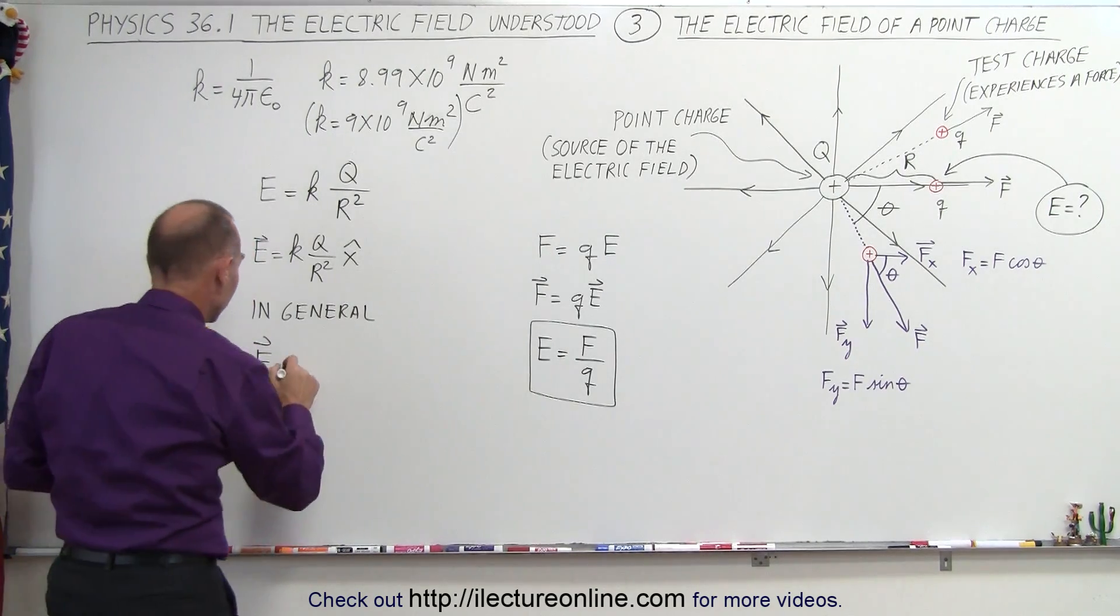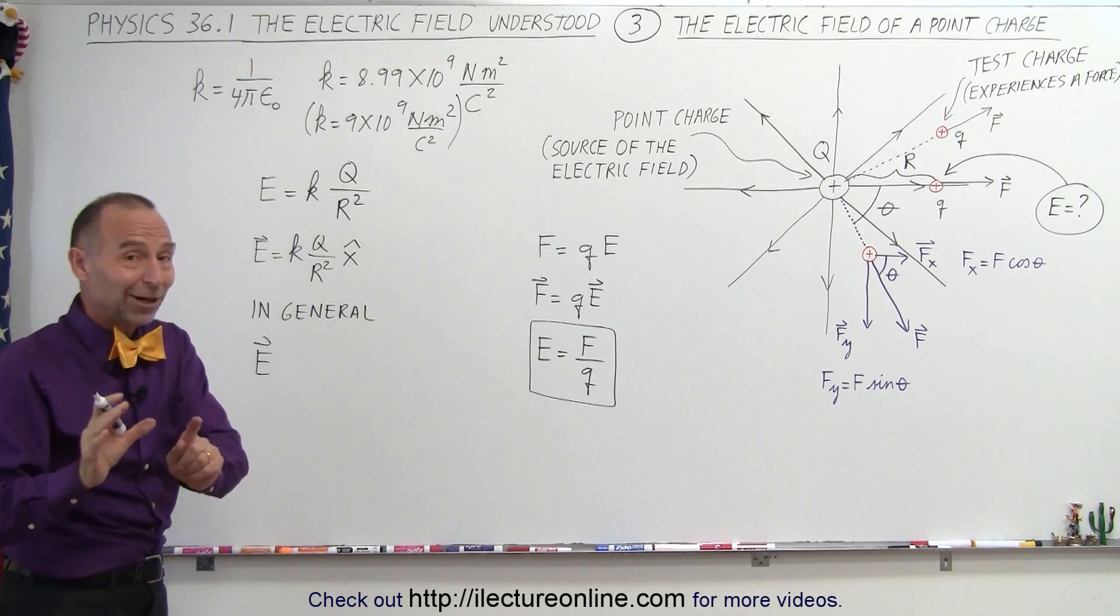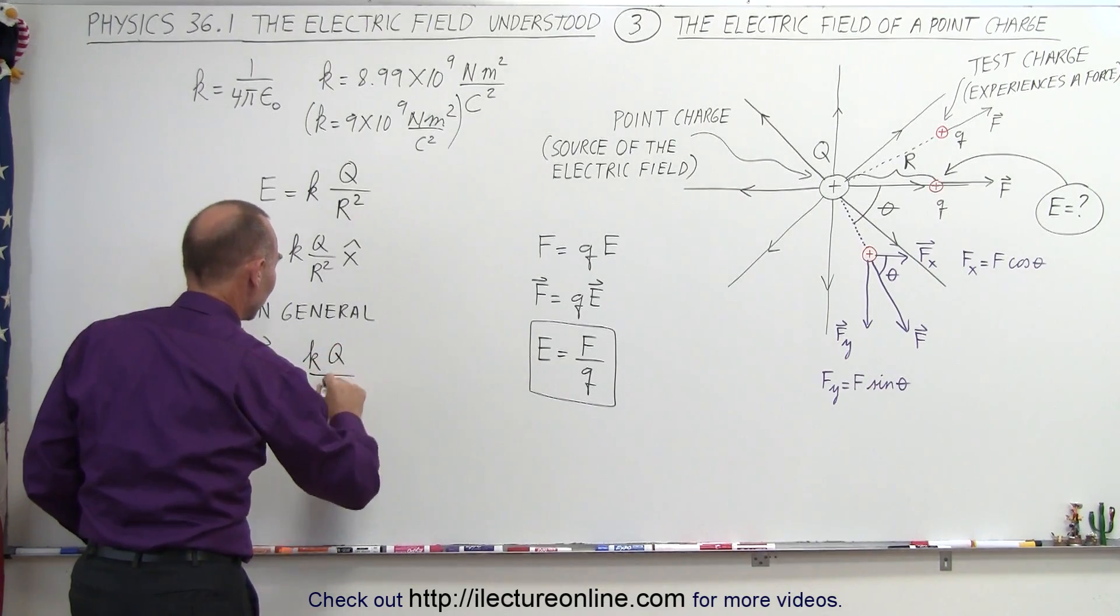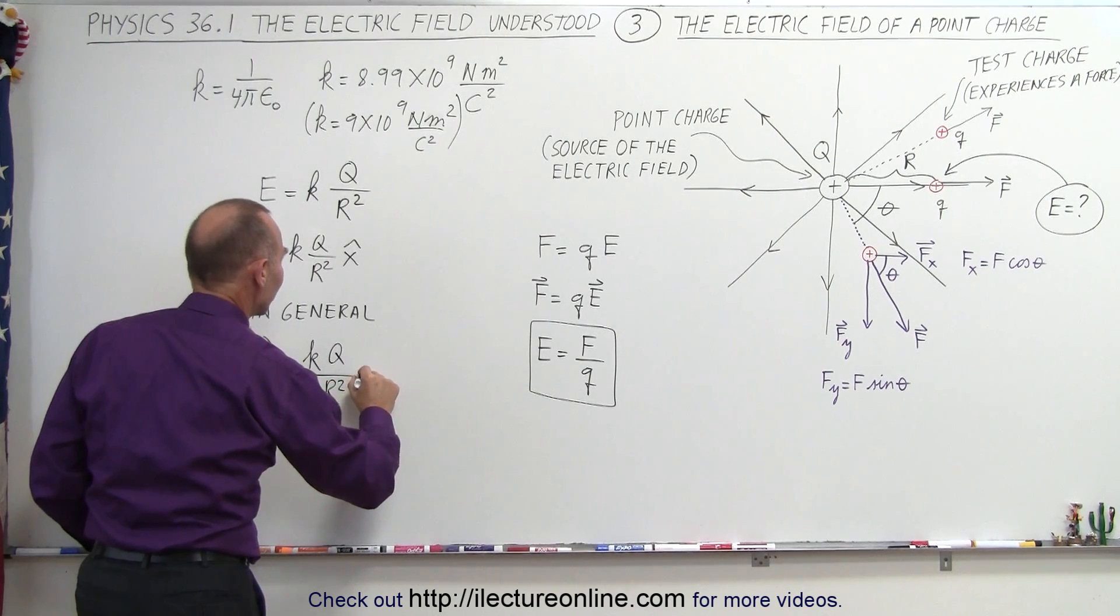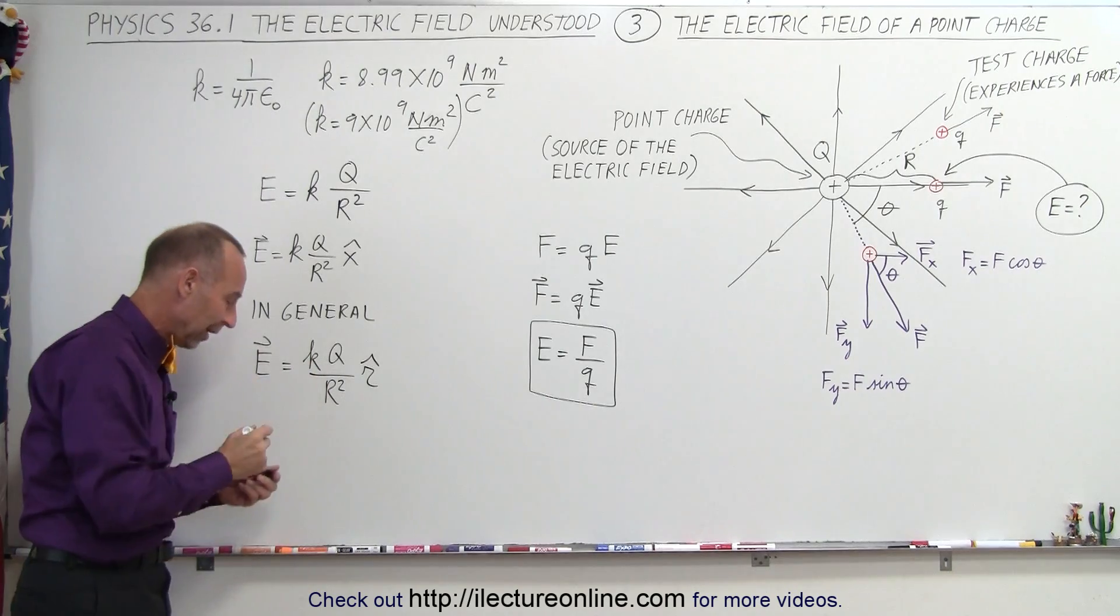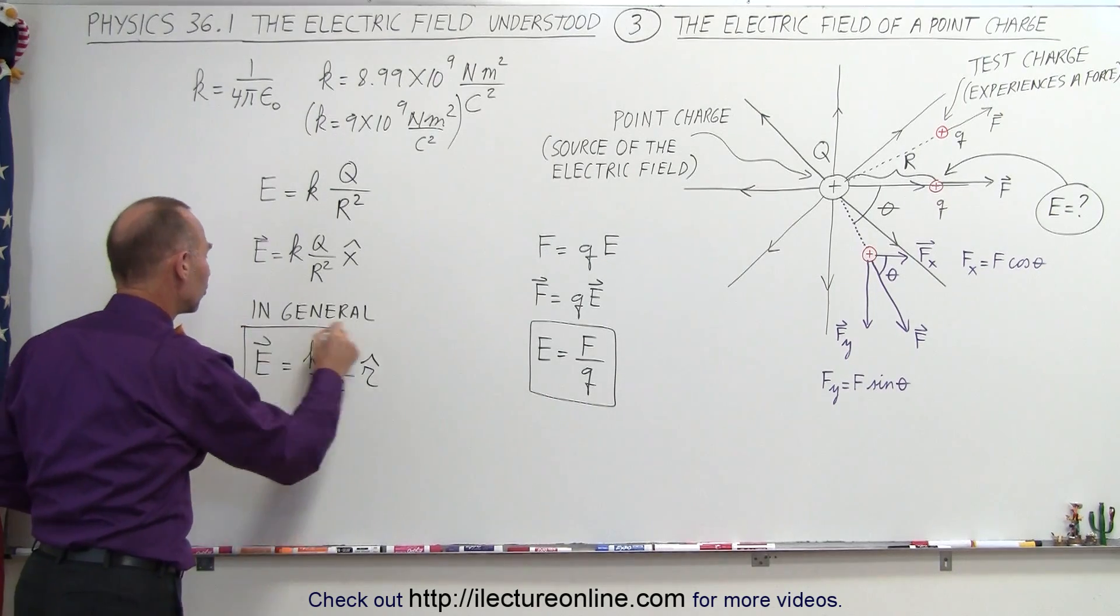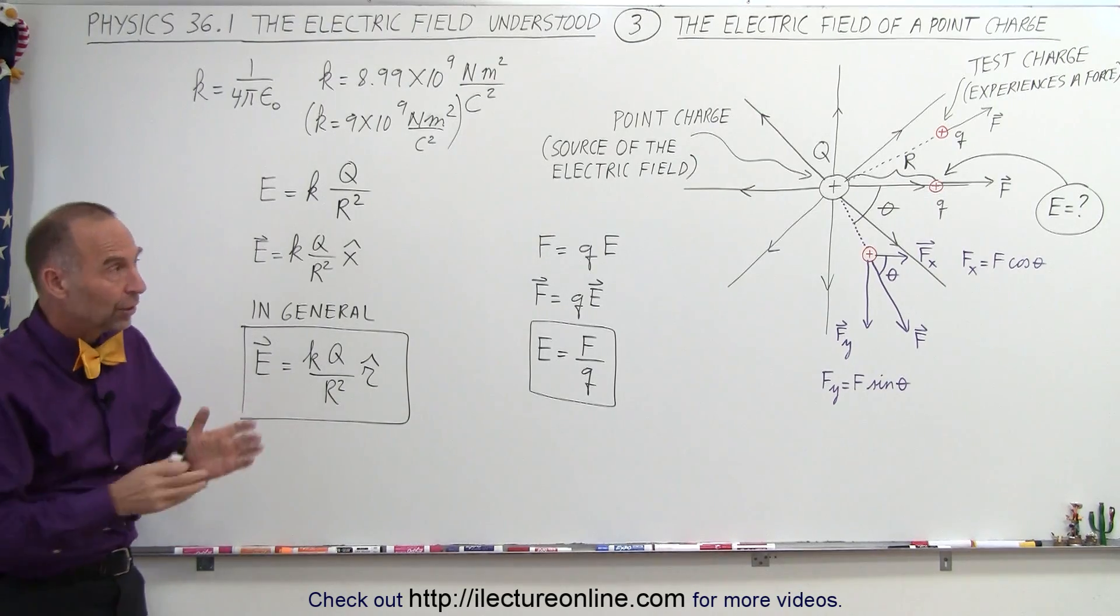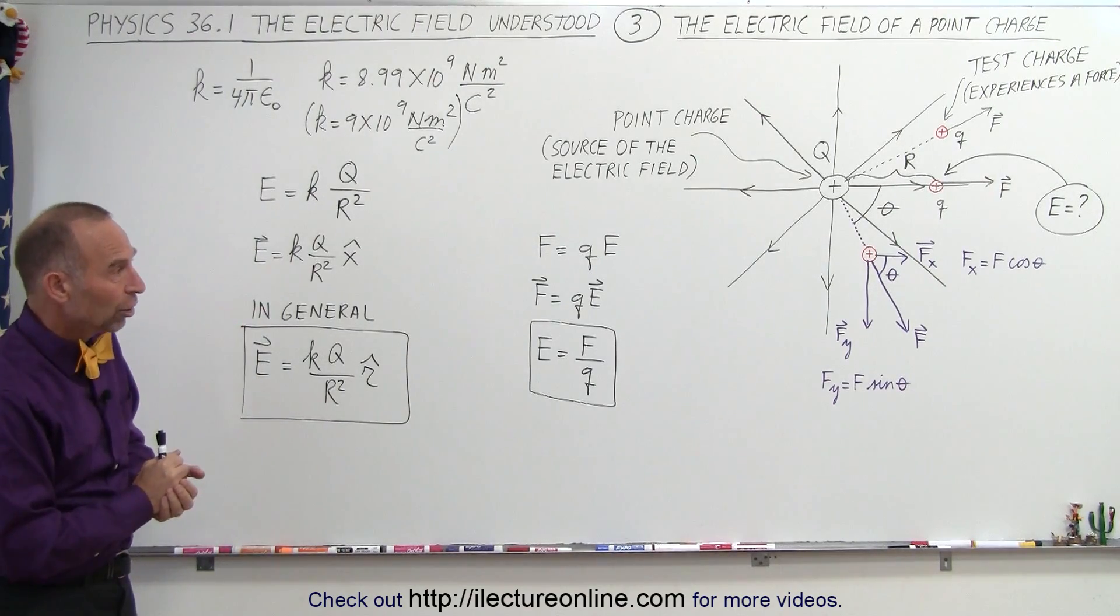That's what I should have said, is equal to k times q over r squared times the unit vector radially outward, which is the r vector. So this would be the most general way in which you can write the electric field around a point charge.